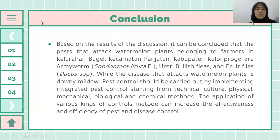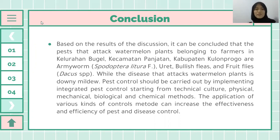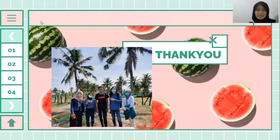Here is the conclusion of our discussion. Based on the results of the discussion, it can be concluded that the pests that attack watermelon plants belonging to farmers in Kelurahan Bugel, Kecamatan Panjatan, Kabupaten Kulon Progo are armyworm, uret, whitefly, and fruit flies. The disease that attacks watermelon plants is downy mildew. Pest control should be carried out by implementing integrated pest management starting from technical culture, physical, mechanical, biological, and chemical methods. The application of various control methods can increase the effectiveness of pest and disease control.